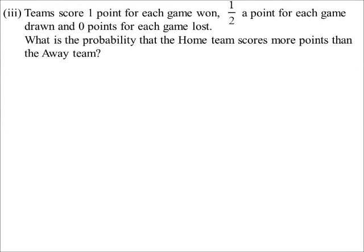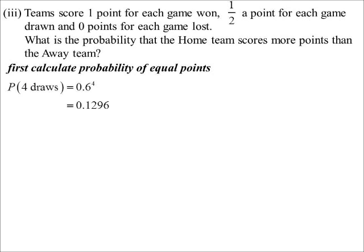Now they make it interesting. A team scores one point for each game won, half a point for a draw, and 0 for a loss. What's the probability that the home team scores more points than the away team? Well, I'm going to work out first of all probability that they have the same number of points. So same number of points, it could be four draws. So that would be 0.6 to the power of four, 0.1296. That would be one way you could get the same score.